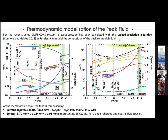Thanks to the aqueous speciation algorithm now implemented in Perple_X, we were able to obtain an aqueous solute-bearing fluid characterized at the peak by 96.3 mol% water, 0.09 mol% volatile species such as CO₂, methane, and H₂S, and 3.7 mol% — equivalent to 11.3 weight percent — of dissolved load composed of all the cations and anions constituting the chemical system, including not only hydrogen, oxygen, carbon, and sulfur.